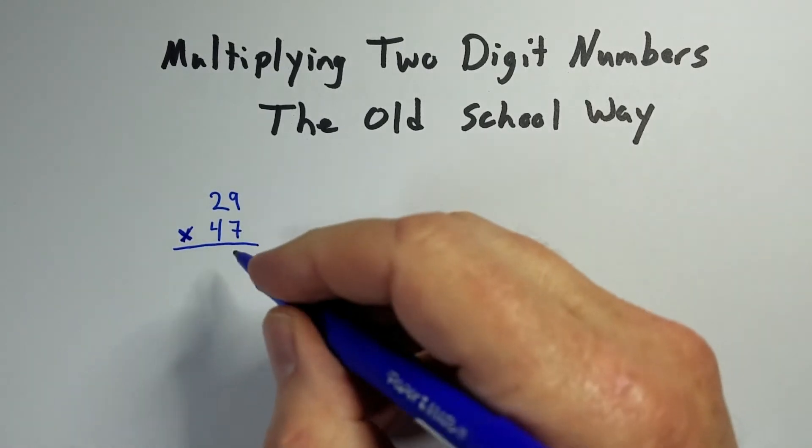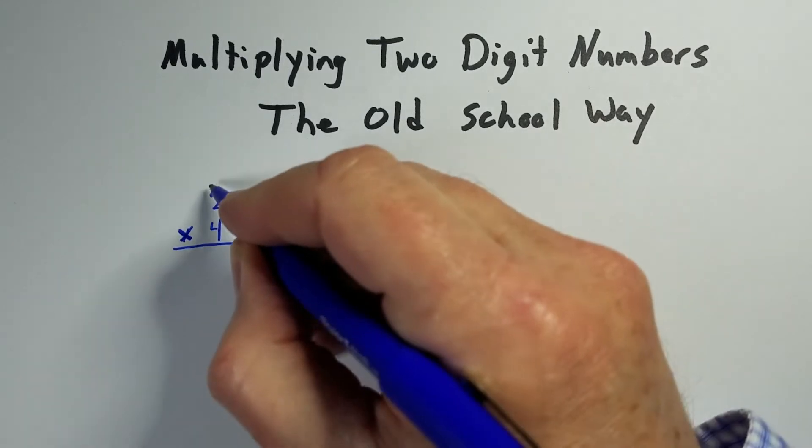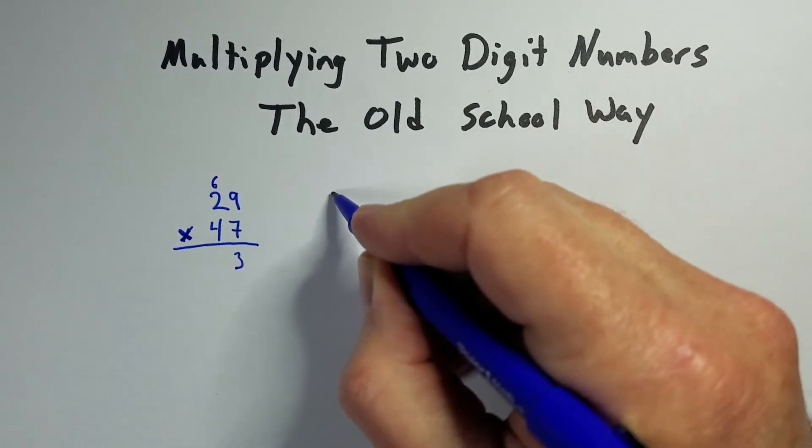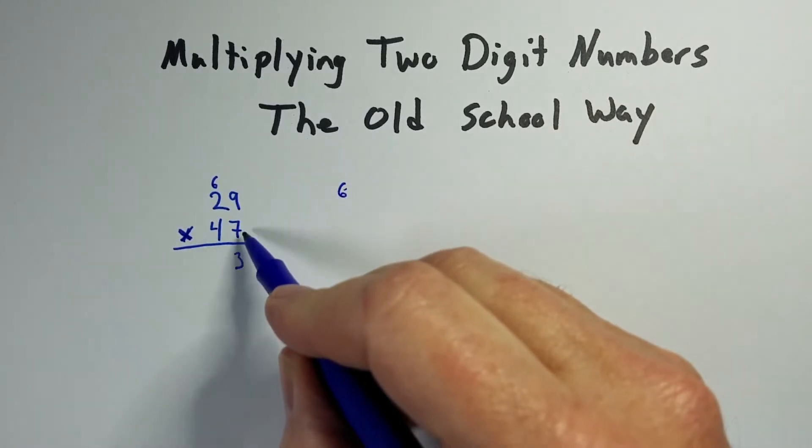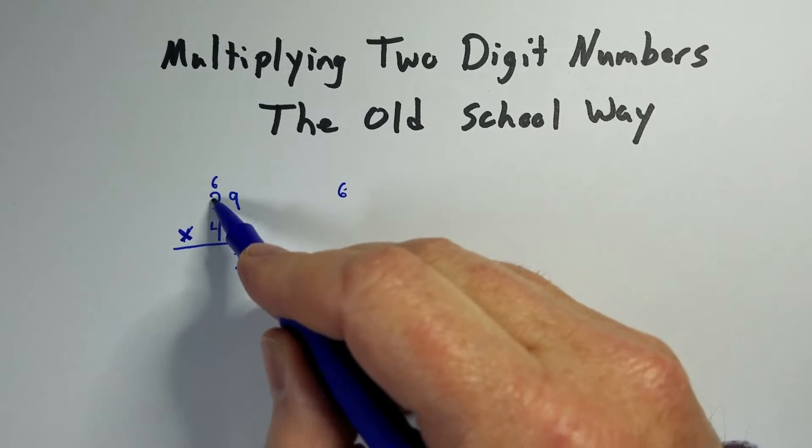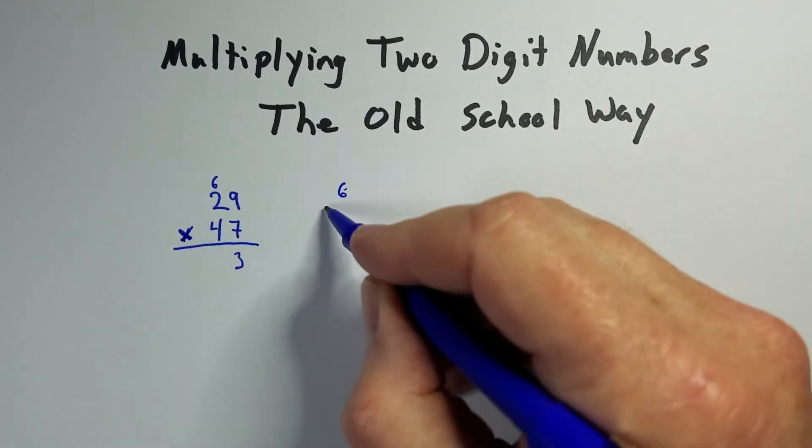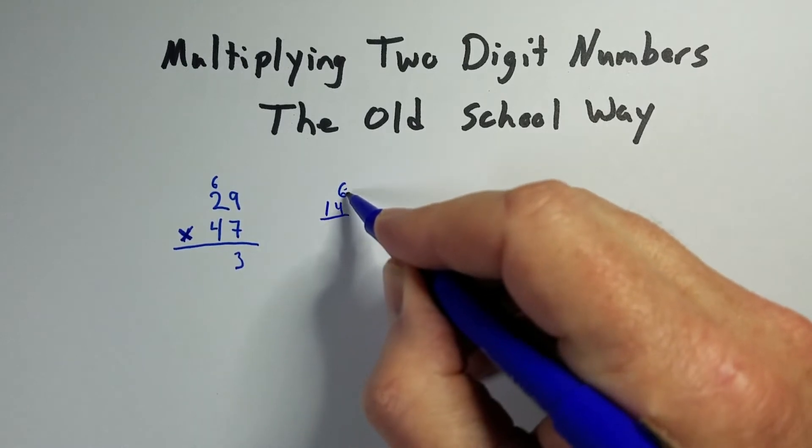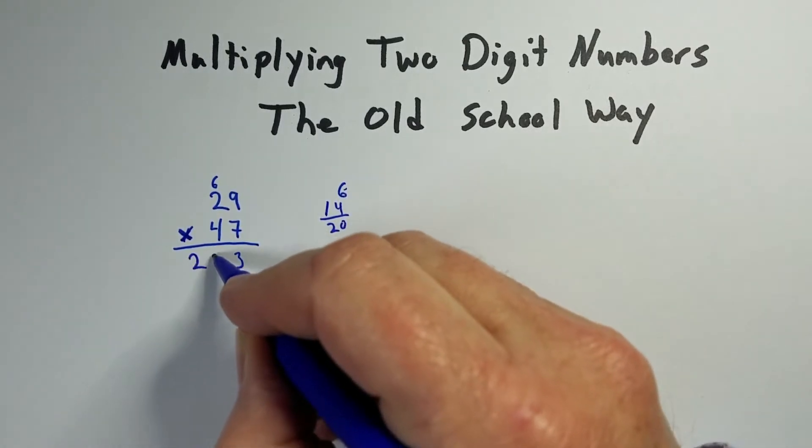So 7 times 9 is 63. So I'm going to put the 3 down here and I'll carry the 6. I'm going to put it over here too, just kind of as an example, because we're going to add that to the next one. So 7 times 2 is 14, but we already have the 6 there, so that gives us a total of 20. So I'm going to put 20 down here.